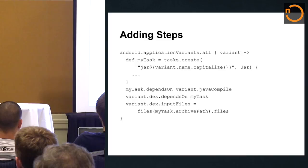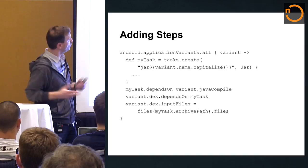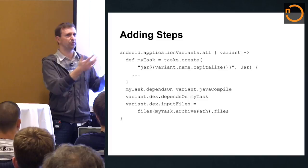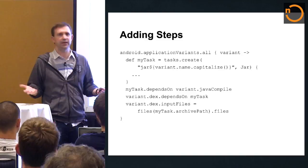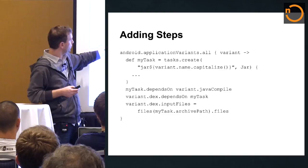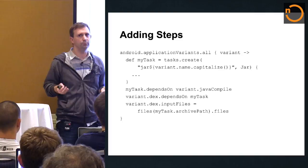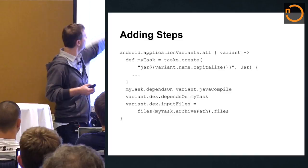Finally, adding custom steps is very easy. We looked at a rich model of what a variant is and its properties, but really at a much lower level, there are just tasks in the end. Here what we do is create a task. So task.create — if you've ever created a task manually in Gradle, that's how you do it. You pass it a name and a type — type Jar in this example. That particular example is very simple.